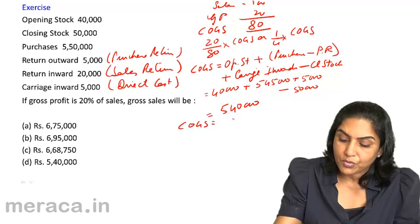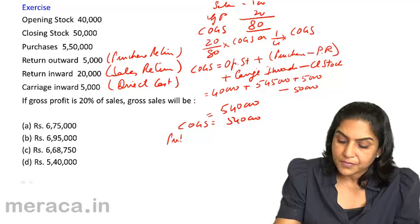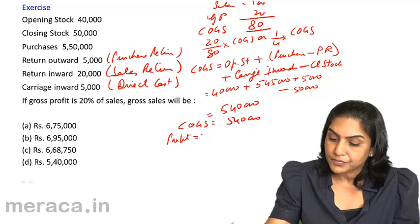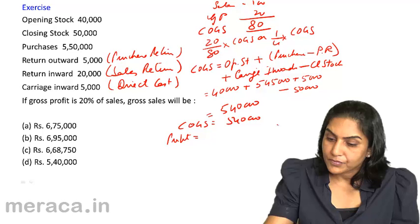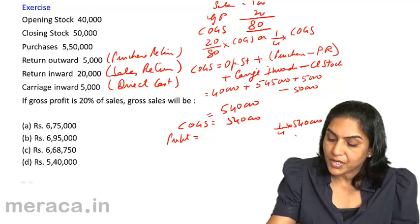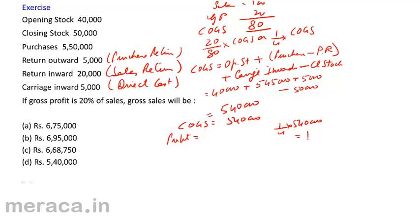Cost of goods sold equal to 5,40,000. Therefore, profit is equal to 1 by 4 of 5,40,000 equal to 1,35,000.